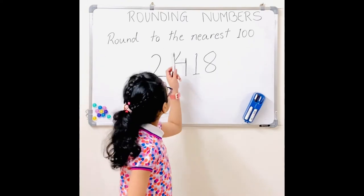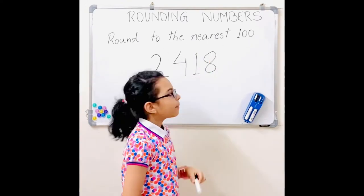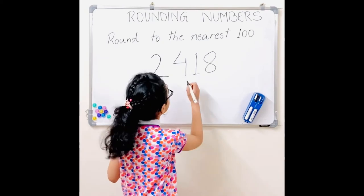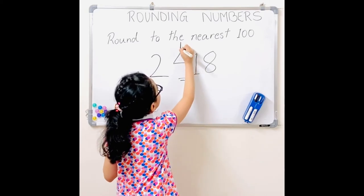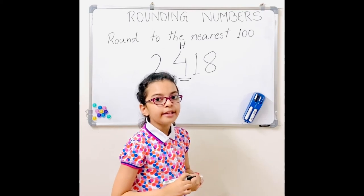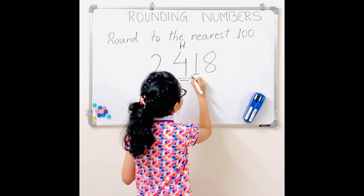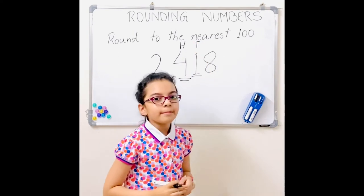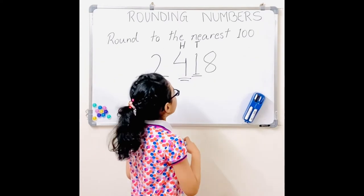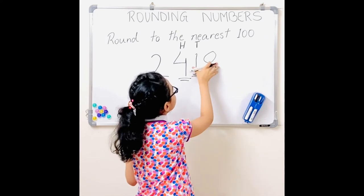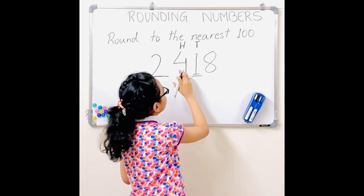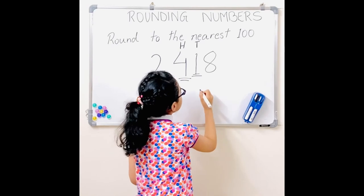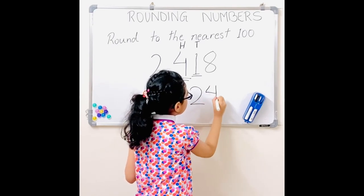Now I'm back with rounding to the nearest hundred. This time my number is 2,418. The digit in the hundreds place is 4. But when we round to the nearest hundred, we check the digit in the tens place — that's 1. And remember, 0, 1, 2, 3, 4 — we round down. So when you round down, you knock off these two digits making them 0, but you don't add anything to the digit in the hundreds place or the thousands place. So then we get 2,400.